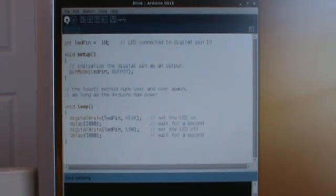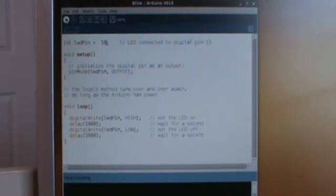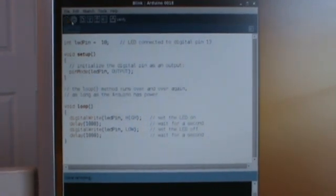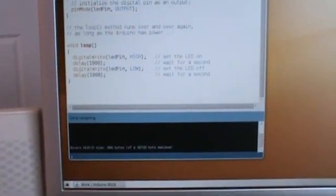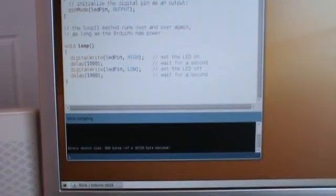So, when we write our program, we come up to the top here and there's a verify button. This is going to compile it and check our syntax. So, we run that. And down at the bottom here, there's this little output window that tells us the status of what happened in our program is fine.